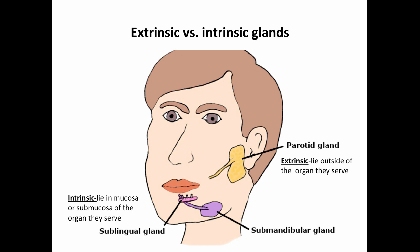We also need to be able to distinguish extrinsic and intrinsic glands. Intrinsic glands lie in the mucosa or the submucosa of the organ that they serve — the sublingual gland is an example, as are the glands found in the mucosa or submucosa of the respiratory epithelium. The parotid gland is an extrinsic gland, as is the submandibular gland — they lie outside of the organ they serve and are joined to it by a long duct. Other examples of extrinsic glands are the liver, the pancreas, and the gallbladder.